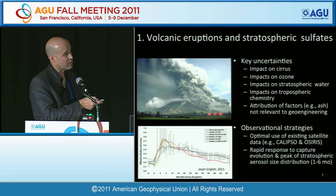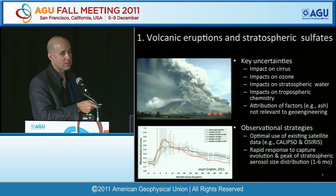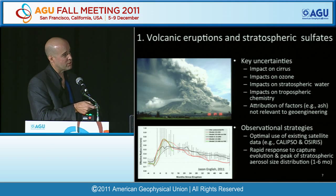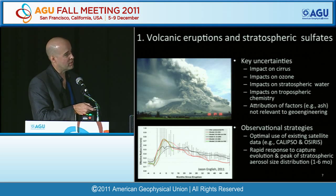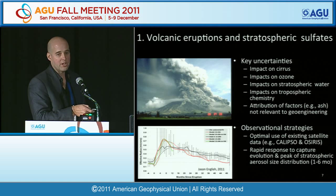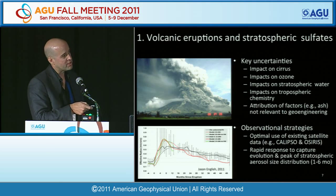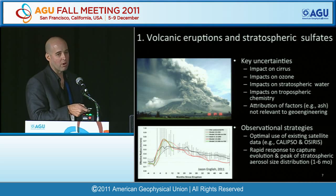For volcanic eruptions as analogues for stratospheric sulfates, key uncertainties include impacts on cirrus clouds including sub-visible cirrus, impacts on ozone, impacts on stratospheric water vapor, and impacts on tropospheric chemistry due to the fallout and evolution of these particles. Attribution is also important — if we're treating volcanoes as representative geoengineering, we have to deconvolve the effects of things like ash that aren't present with geoengineering. This is an attribution and representativeness problem.